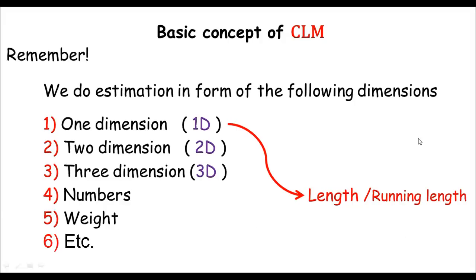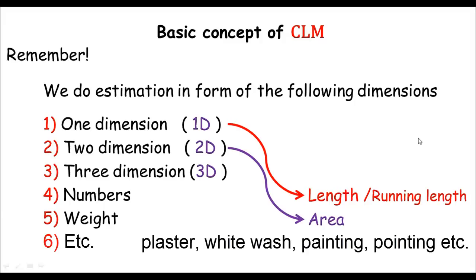By two dimension, I mean just area. Sometimes we do estimation in area. Like we always do the calculation for plaster in area. The whitewash is also calculated in area, and of course painting is also done in area.